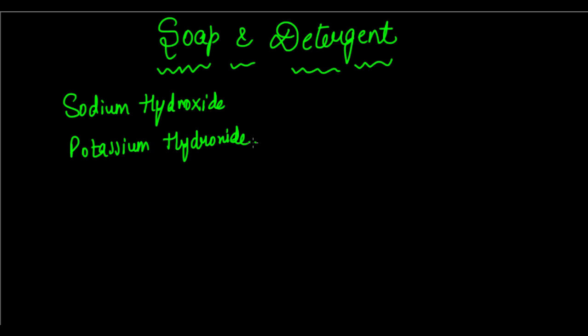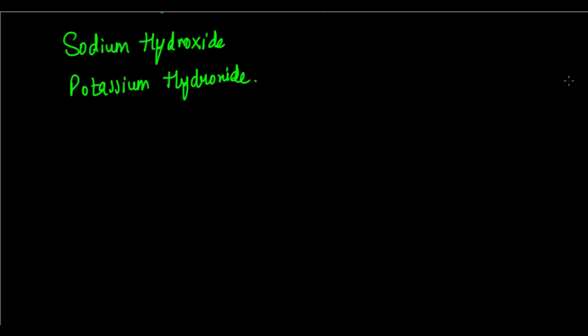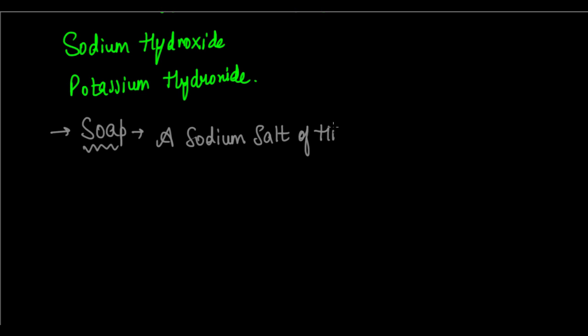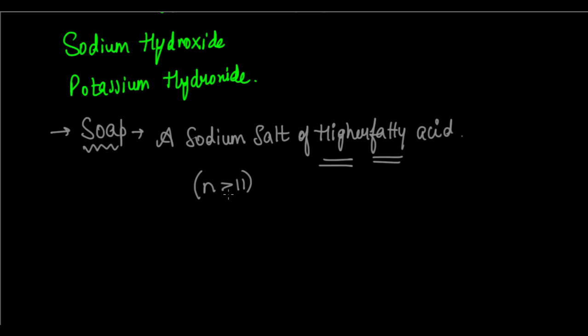Now let us look at soap and detergent in a more detailed way — what is soap, what is detergent — and we're going to study the cleaning action of soap specifically. So starting with soap: soap is basically a sodium salt of higher fatty acid. Fatty acid is basically a class of carboxylic acids, and higher fatty acids means it has more than 11 carbon atoms. So it is a sodium salt of a long-chain carboxylic acid with more than 11 carbon atoms.